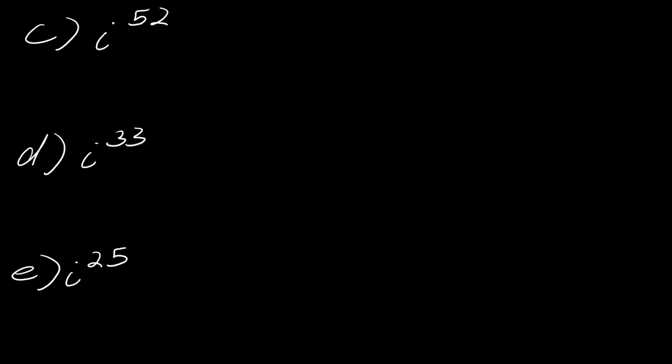So I have three more of these if you want to give this a try again. Hit play when you're ready. So for this first one, i to the 52, how many times will 2 evenly go into 52? Well, it will go in 26 times. So now i squared is negative 1. What is negative 1 to the 26th? It's just positive 1.